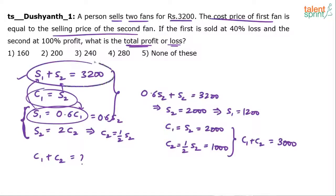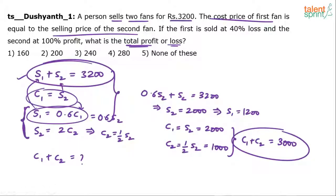We know S1 plus S2 is 3200, and C1 plus C2 is 3000. Since selling price is more than cost price, there is a profit. The profit is 200 rupees. Please do not be intimidated by the length of the explanation — when solving in an exam, you can cut down the number of steps. The final answer is option two: 200 rupees profit.